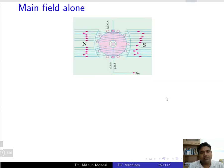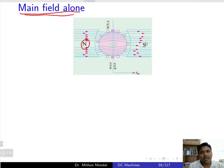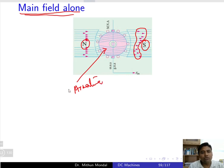Let us understand the phenomenon of armature reaction by considering the flux one by one. First, consider that there is flux due to the main field alone and armature current is not there — the armature conductor is not carrying any current. You can see that the north pole and south pole are the main poles, and due to them there are flux lines originating and passing through the armature. The magnetic flux lines due to the main poles pass through the armature, but since there is no armature current, there is obviously no armature flux.